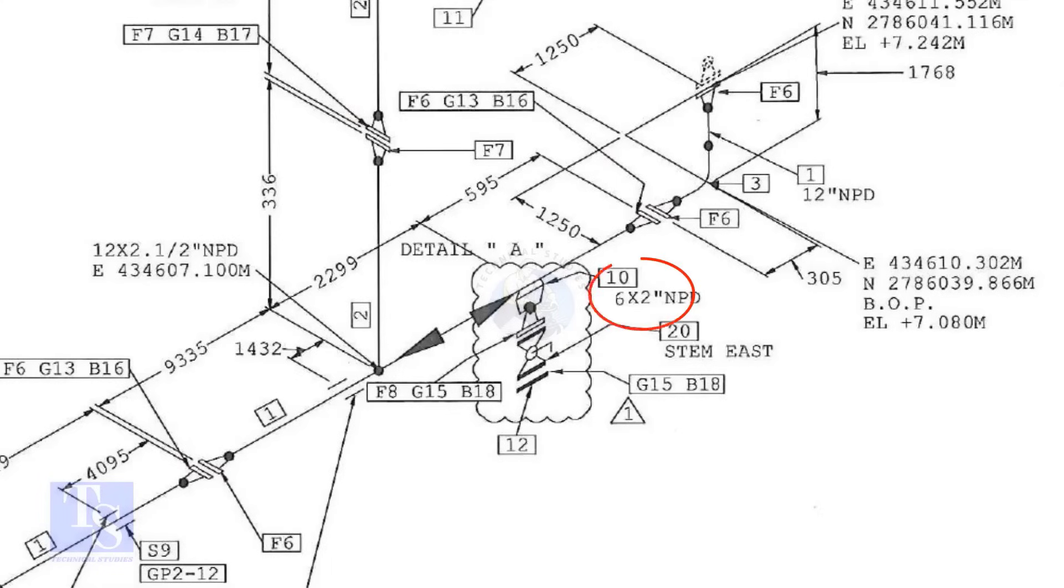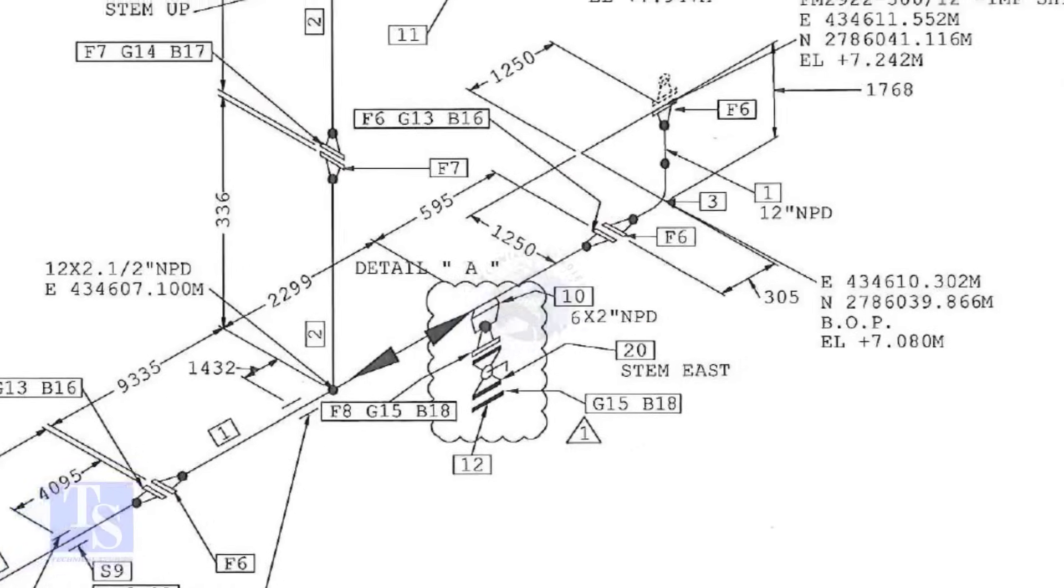In this drawing, the size of the weldlet is 6 inches by 2 inches. Let us first check item number 10 in the description.